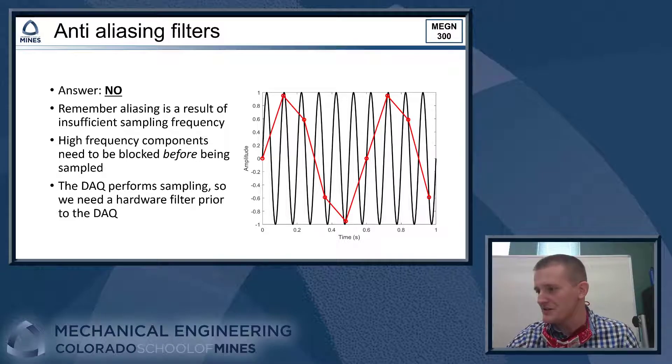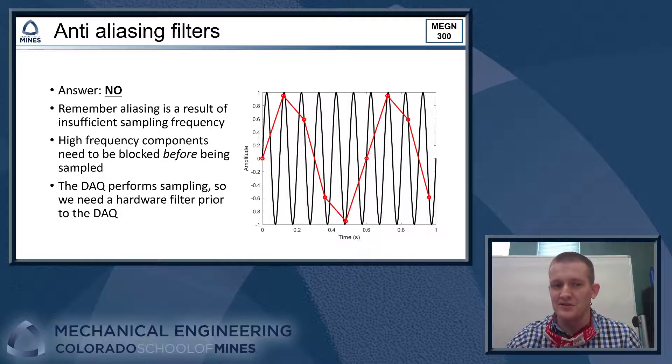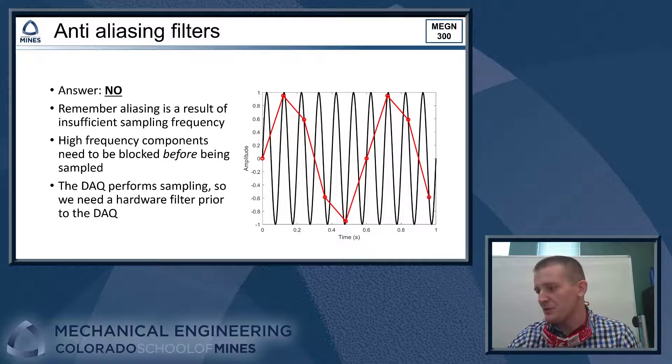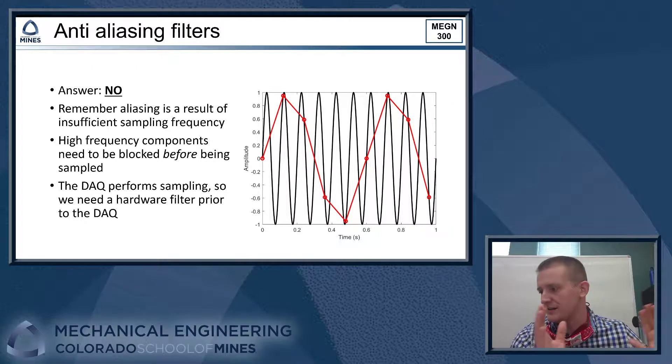All right. We have to remember the aliasing as a result of sampling. That is a phenomenon that happens when we sample the data. So by the time we've sampled our data, all the high frequency components are already aliased in LabVIEW. Remember the sampling happens in the DAC. So we have out in the analog space, we effectively have an infinite sample rate. We've got these really high frequency components that can come into the DAC and then the DAC has to sample that at a finite sample rate.